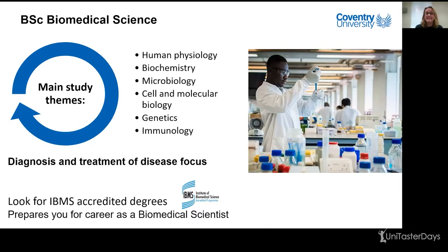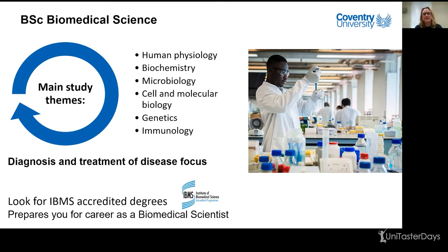The first course is BSc in Biomedical Science. These courses have a very clear focus on diagnosis and treatment of disease. The main study themes are usually human physiology, biochemistry, microbiology — the study of bacteria, viruses, fungi and parasites — cell biology, molecular biology and DNA, genetics and immunology. It's a broad range degree, but it gives you that diagnosis and treatment of disease focus. A biomedical scientist analyses blood samples, urine samples, and bodily fluid samples to determine what's causing a disease and to inform treatment options.